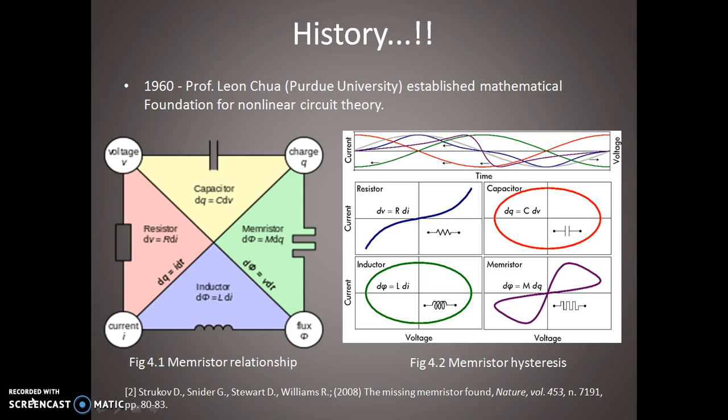Now let's look at the history of these memristors for a bit. Traditionally, there are only three independent two-terminal passive circuit elements, namely R that is resistor, L that is inductor, and C that is capacitor. However, in 1960, Professor Leon Chua established mathematical foundation for non-linear circuit theory in which there was another independent differential relationship which was dφ = mdq. That was mathematically different from the non-linear resistance that coupled the voltage V to the current I, dv = rdi.